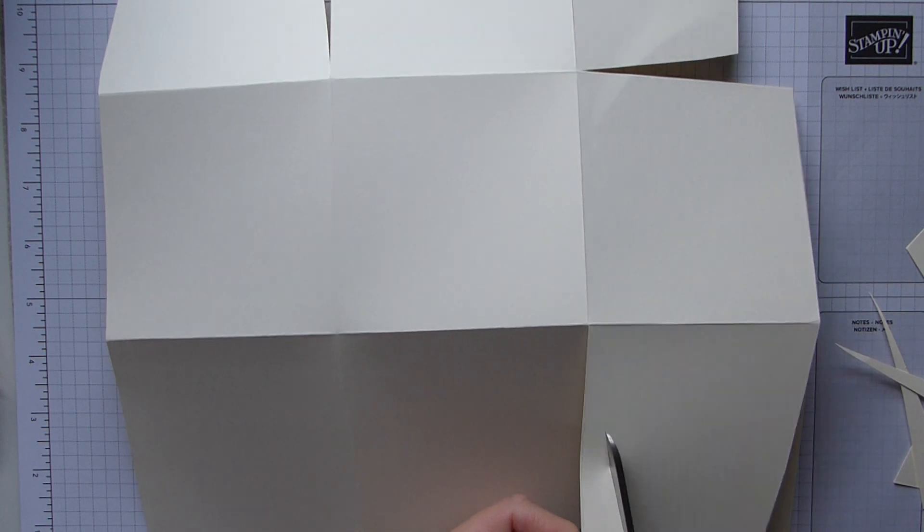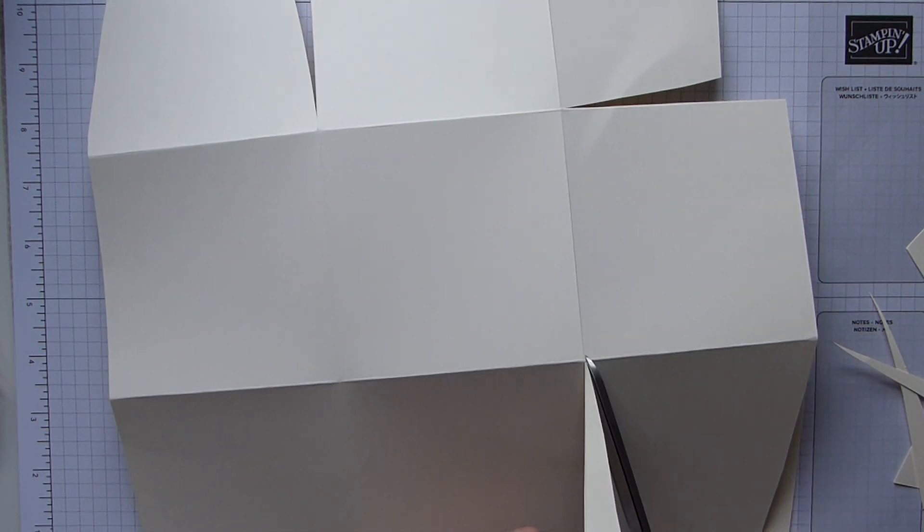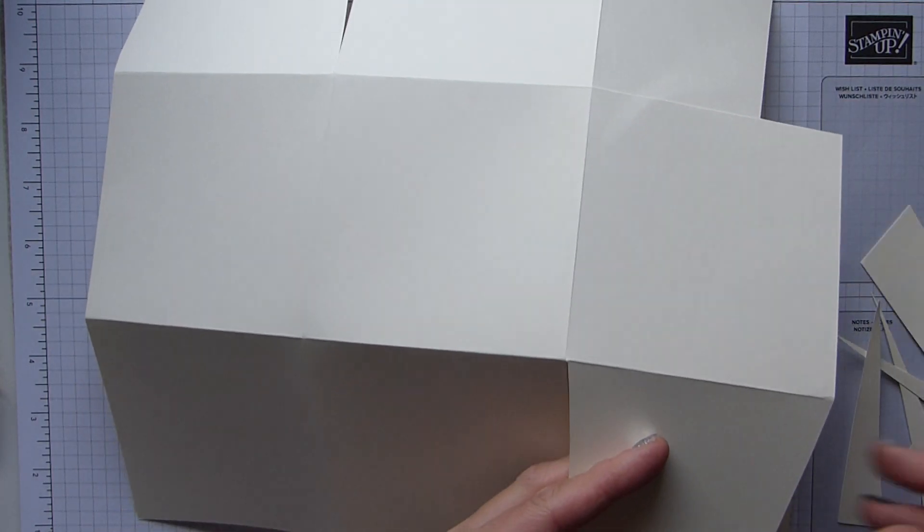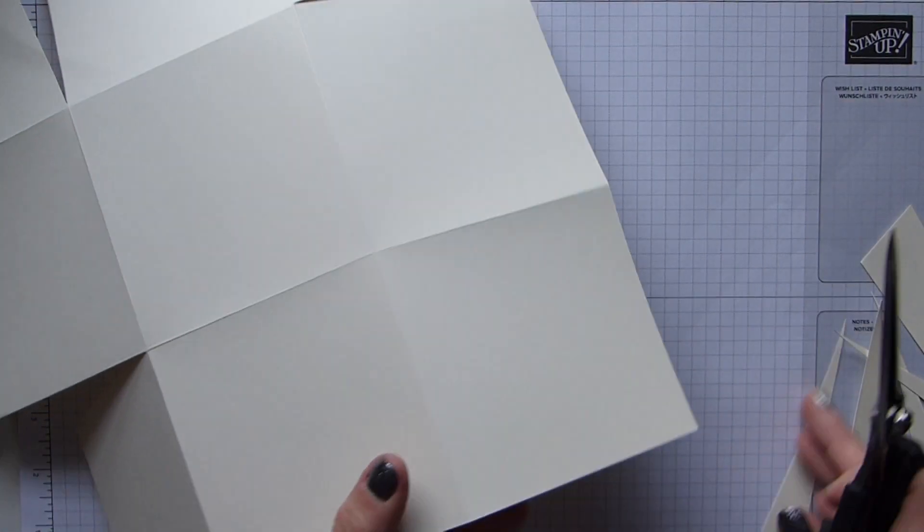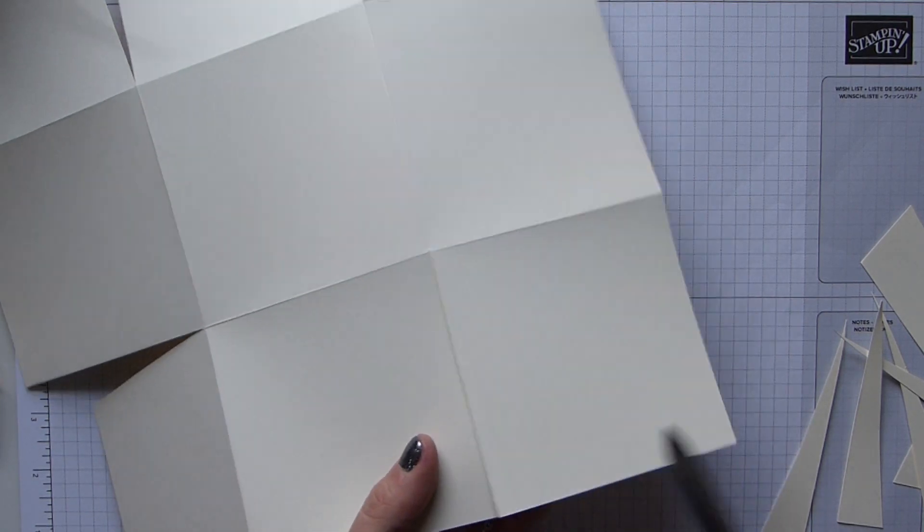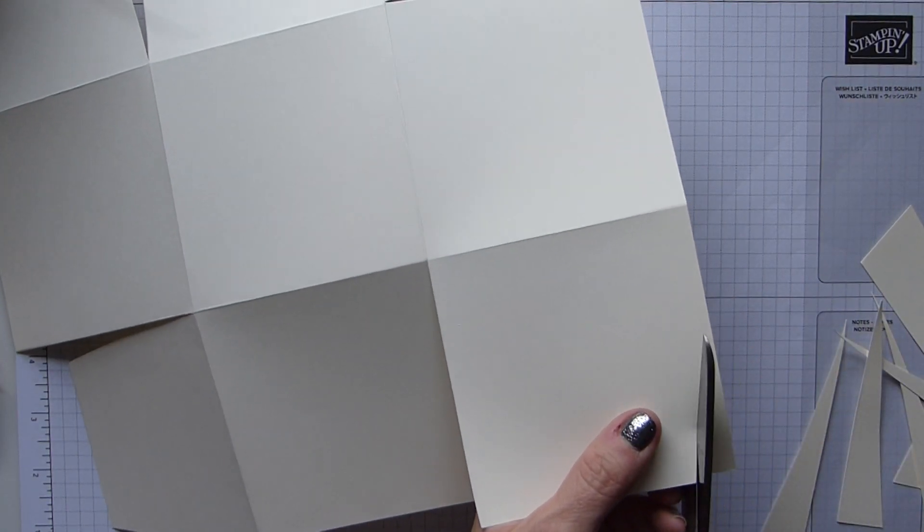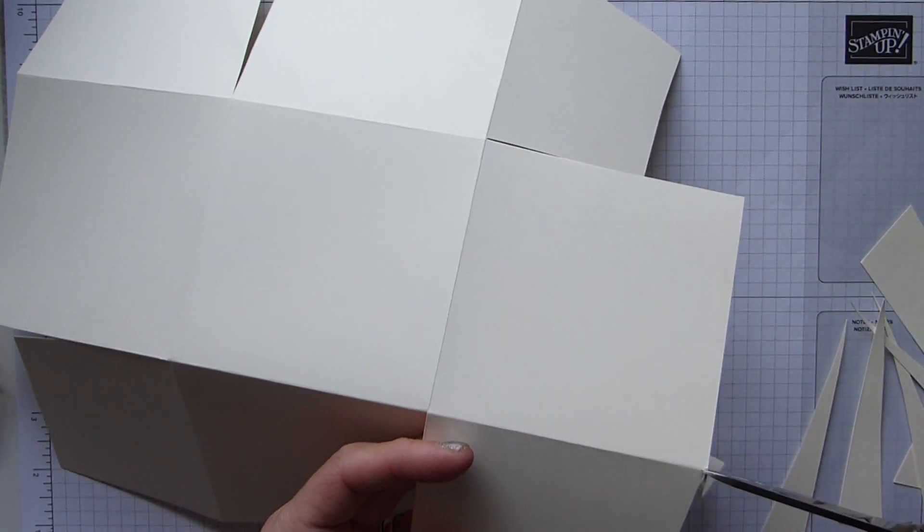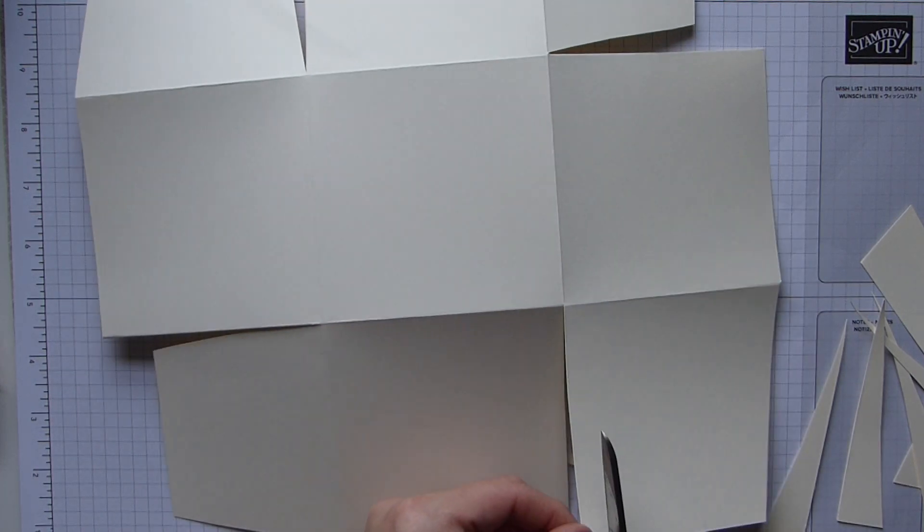I like the fact as well that I'm using Very Vanilla because it's a color that I don't really use a lot of, which is a shame because it is just as user-friendly as the Whisper White. So last one, cut those wedges, and this one.